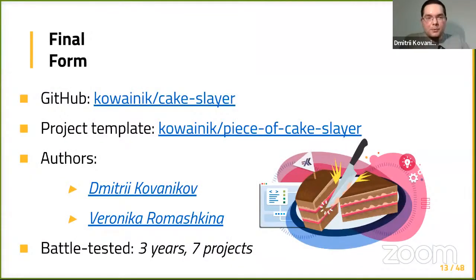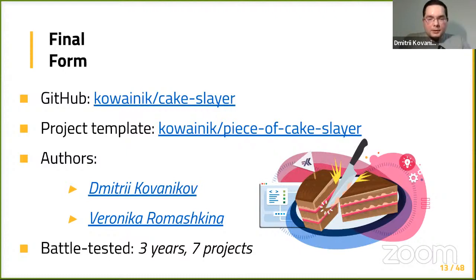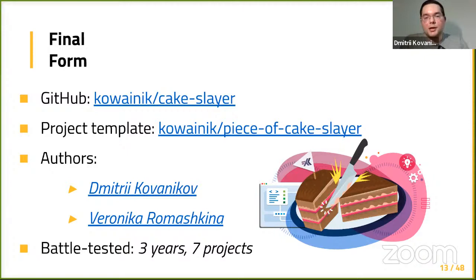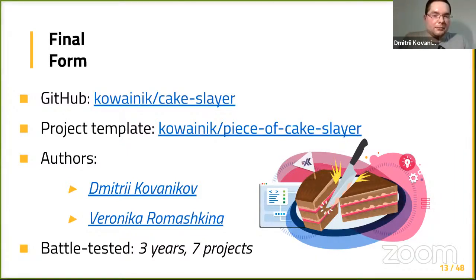After using this template approach for a while, we realized it was possible to move all these common parts into a separate framework. You can think of a framework as a big library with lots of opinionated choices that also helps you be more efficient. This is Cake Slayer — it's on GitHub, open-sourced under Kovayanik. There is also a project template called Piece of Cake Slayer, also open-sourced, which shows a working backend with everything configured using the framework. It was created by Veronica and me, is battle-tested, has been here for three years, and has been used successfully in at least seven projects.